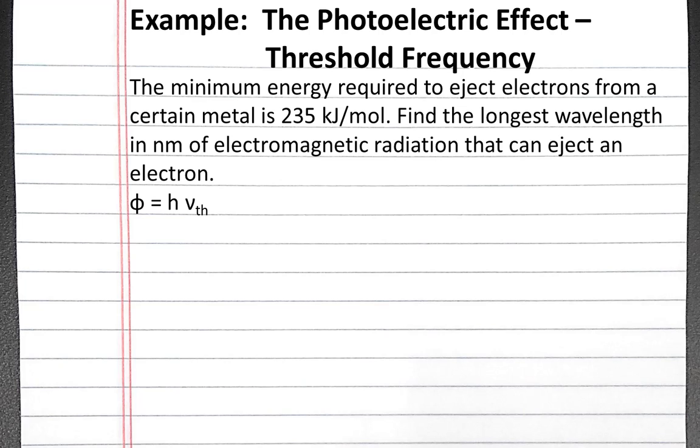For this problem, we'll want to use the equation binding energy equals Planck's constant times the threshold frequency. Rearranging this equation, we can solve for the threshold frequency. And we can use the equation wavelength equals the speed of light divided by frequency to find the corresponding wavelength.